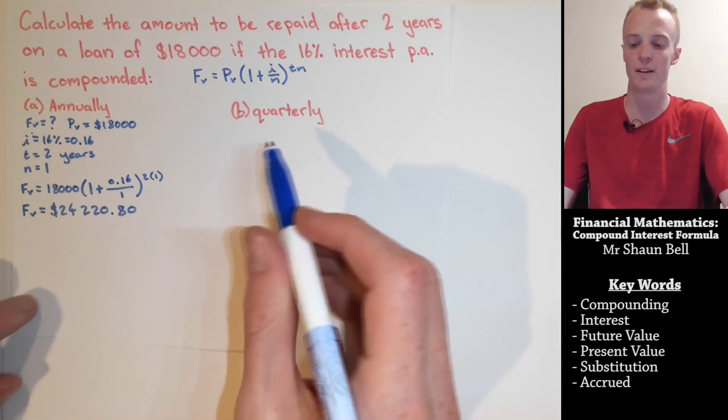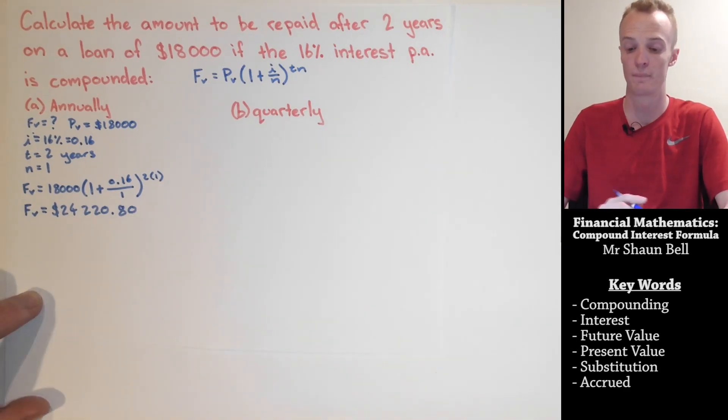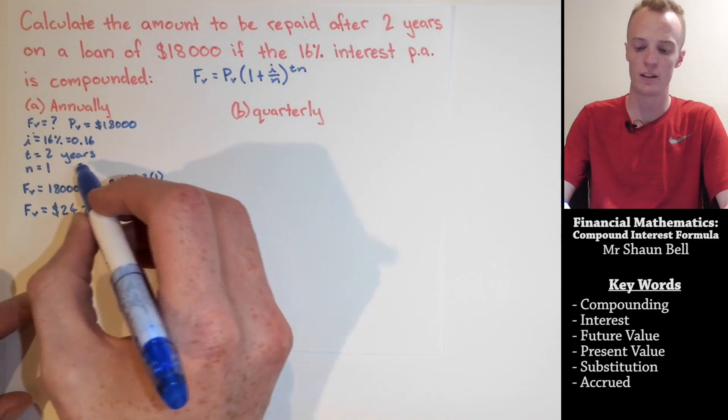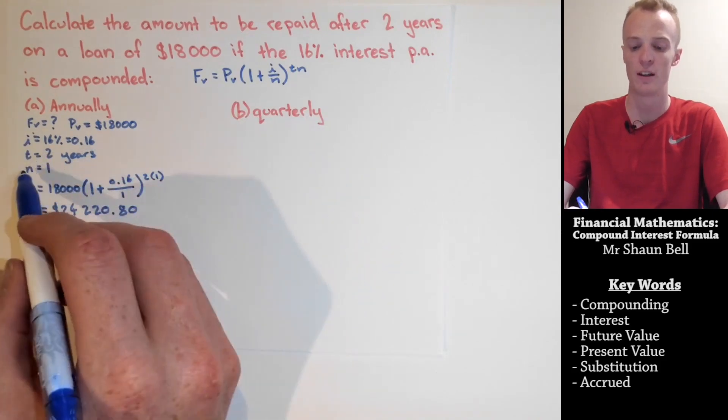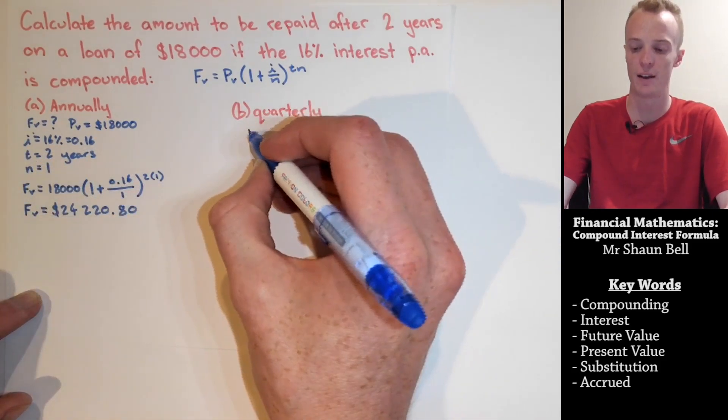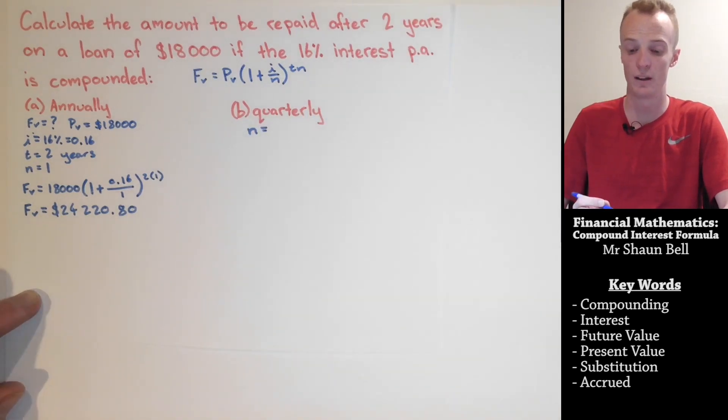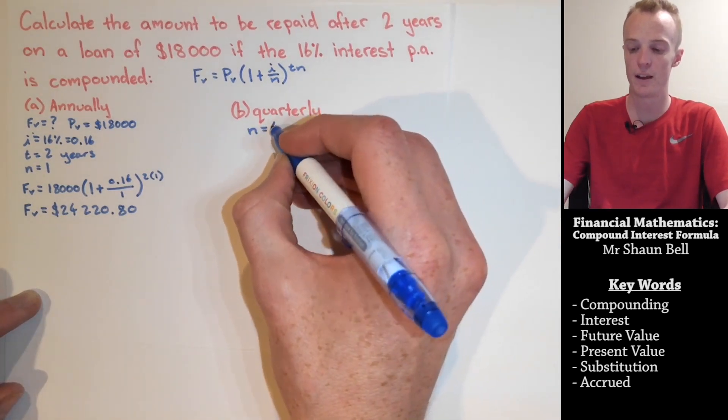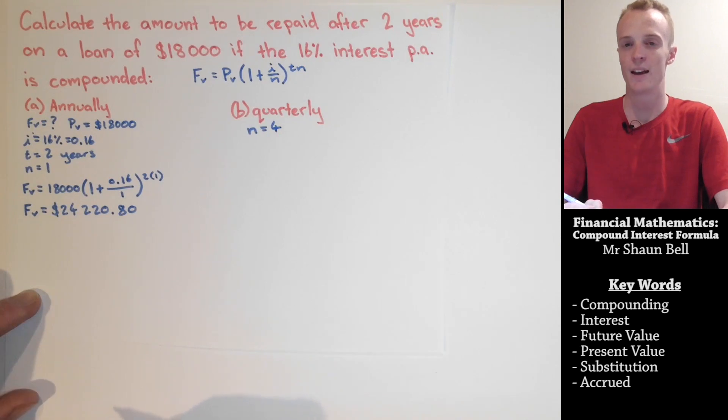So let's see how this compares when the interest is compounding quarterly. Now, our information is all the same for this question, except for our value of n. Now, because the interest is compounding quarterly, our n is going to be equal to 4.